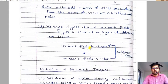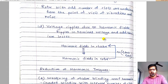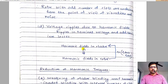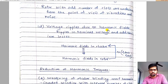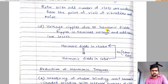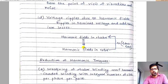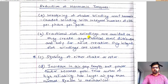Another effect is voltage ripples caused by harmonic fields. Whatever happens in the rotor is an effect of what happens in the stator. Harmonic fields in the stator induce harmonic fields in the rotor, and by Lenz's law those rotor harmonic fields induce back harmonic fields in the stator, causing ripples in the terminal voltage and additional iron losses.